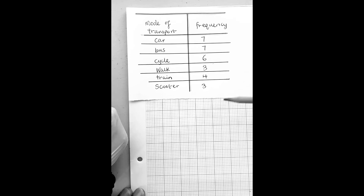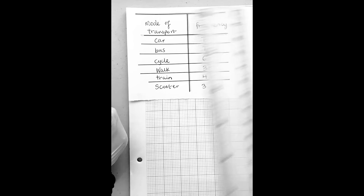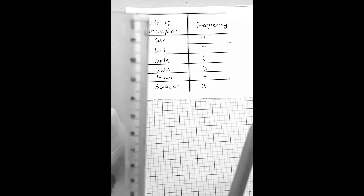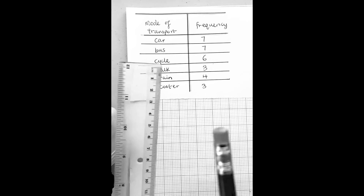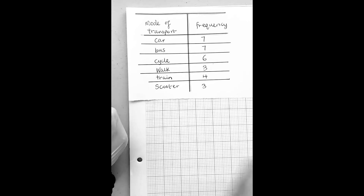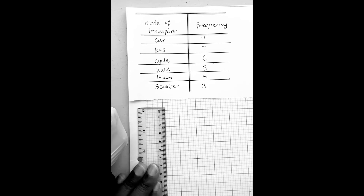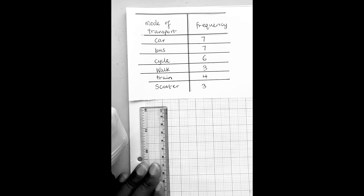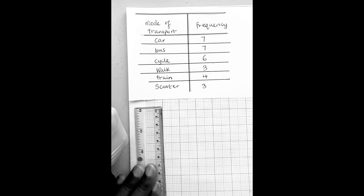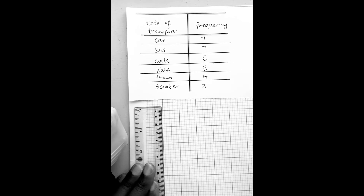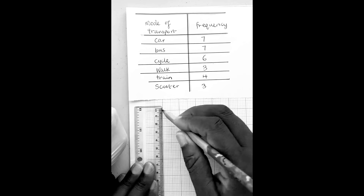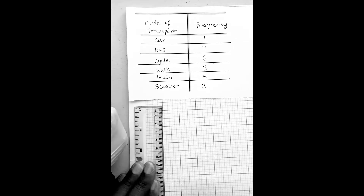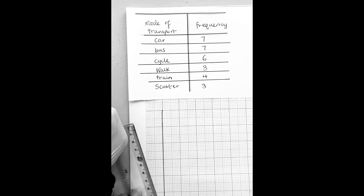To draw a bar chart following our rules, we use a pencil, a ruler, and a rubber. The bars have to be the same width, the gaps have to be the same width, and we put the frequencies on the y-axis. I've got my frequencies going all the way up to seven, so I can count in ones or in twos - I've got to choose a scale.